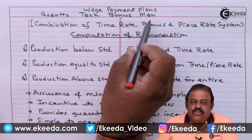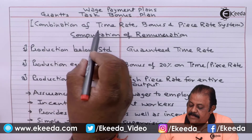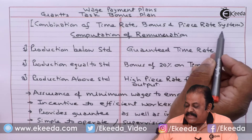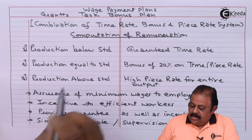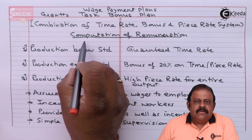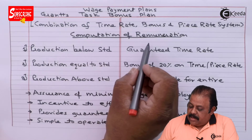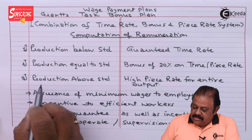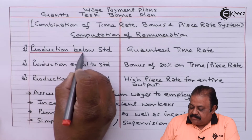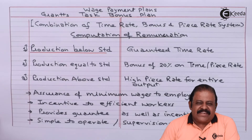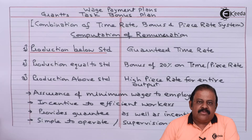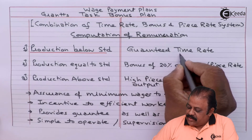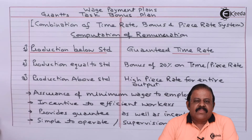Grant's Task Bonus Plan is a combination of time rate, bonus, and piece rate system. According to him, remuneration of wages should be computed based on standard output. If a worker gives production below standard — that is, below the predetermined estimated output — then he should get only the guaranteed time rate.